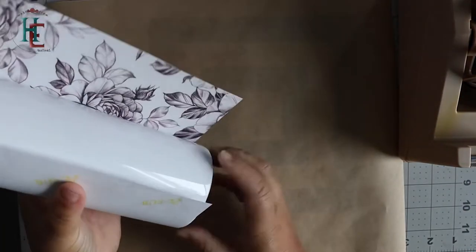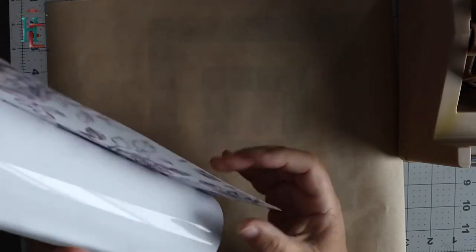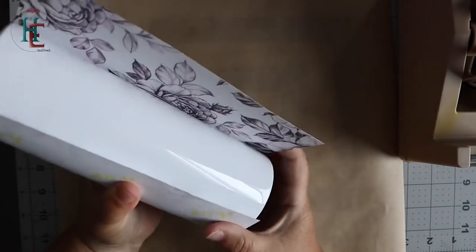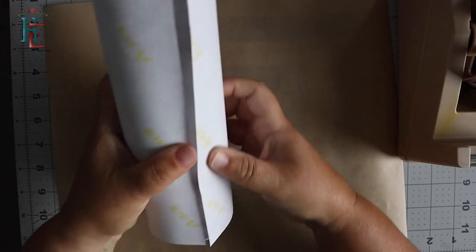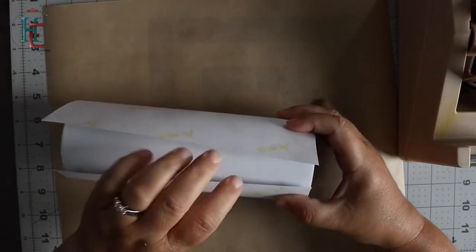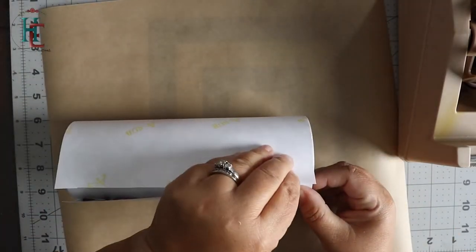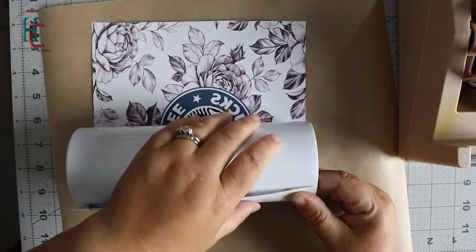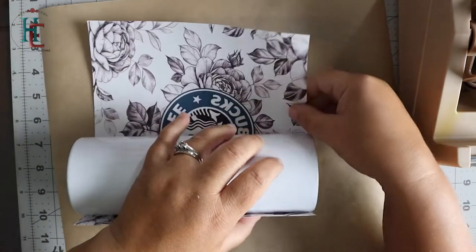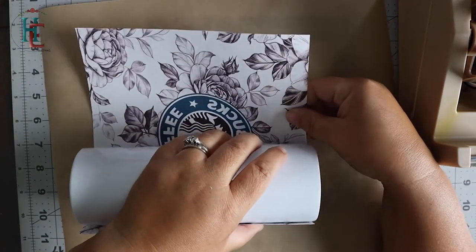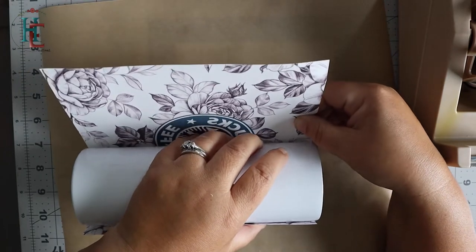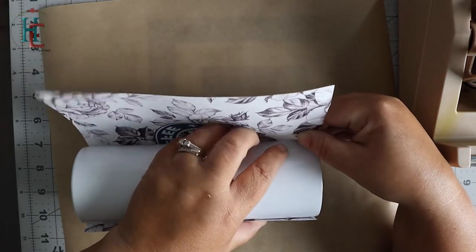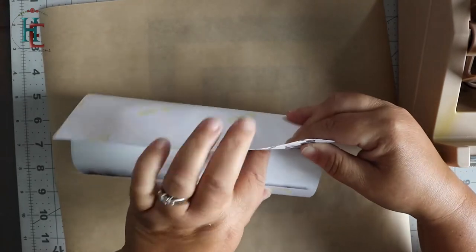Let's get started with taping this beautiful piece of art. One thing you want to do is make sure your paper lines up perfectly with your tumbler. As you can see, I'm trying to adjust it so it's perfectly at the top rim. There's a lot of pulling and twisting to get it perfect.